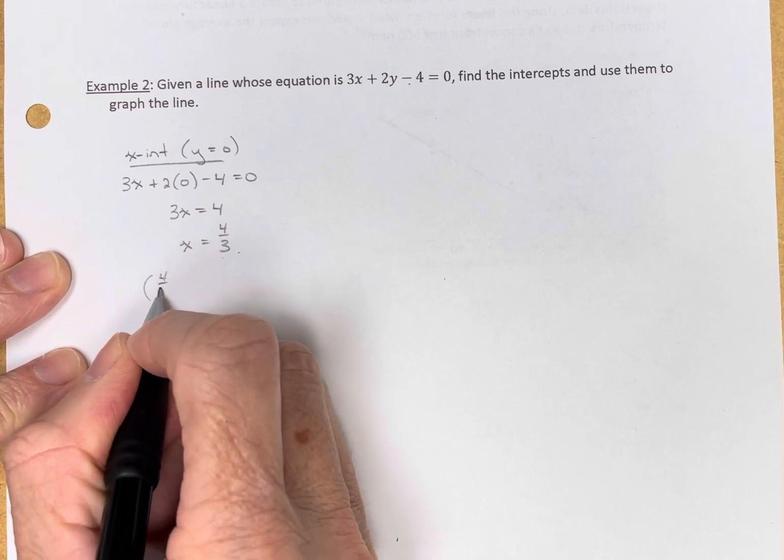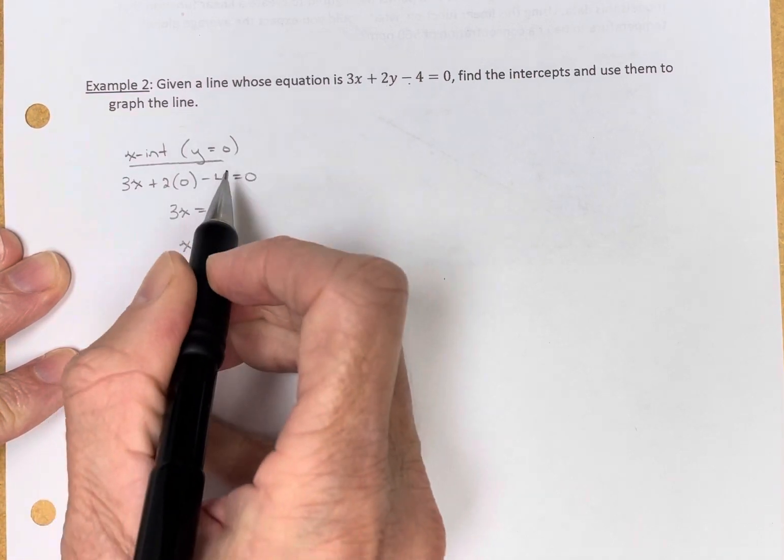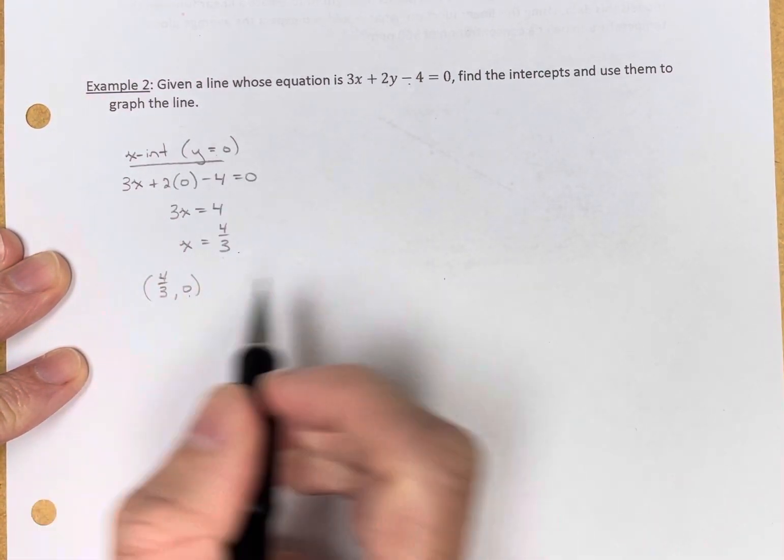So the x-intercept, the location on the x-axis where the line crosses, is 4 thirds. As a point, that's 4 thirds comma 0. y is 0, so there's your 0 for your y.